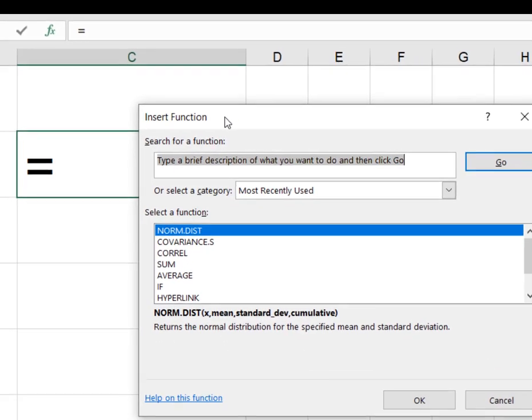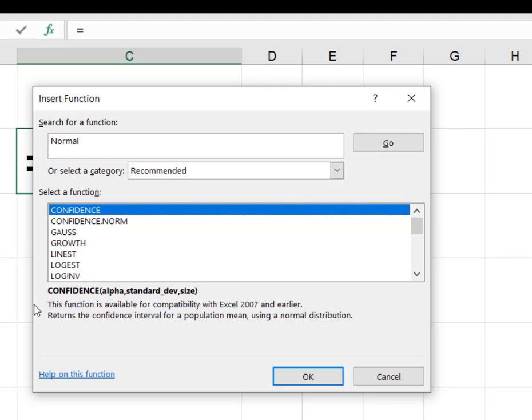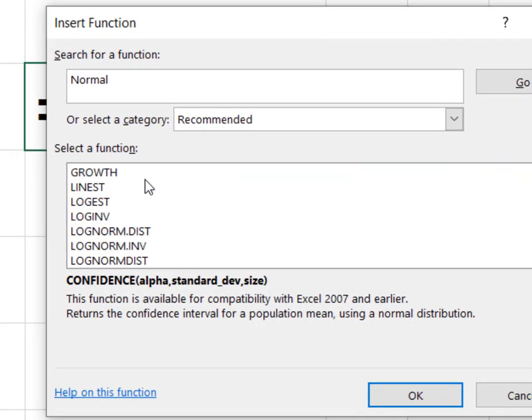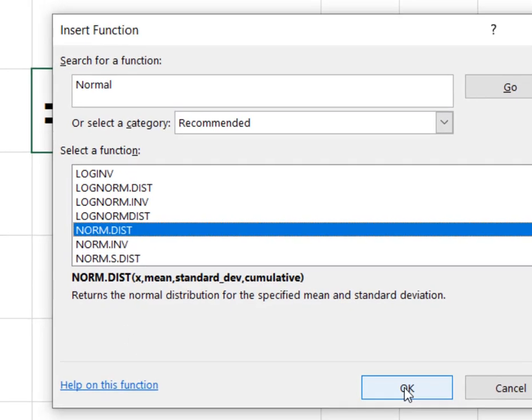So here I am in Excel and I want to use the insert function feature so that it will give me a dialog box. So I'm just going to type in normal and hit go. And it's going to give me a list and what I'm looking for is this one right here, normal distribution, NORM.DIST. And I'm going to hit OK.